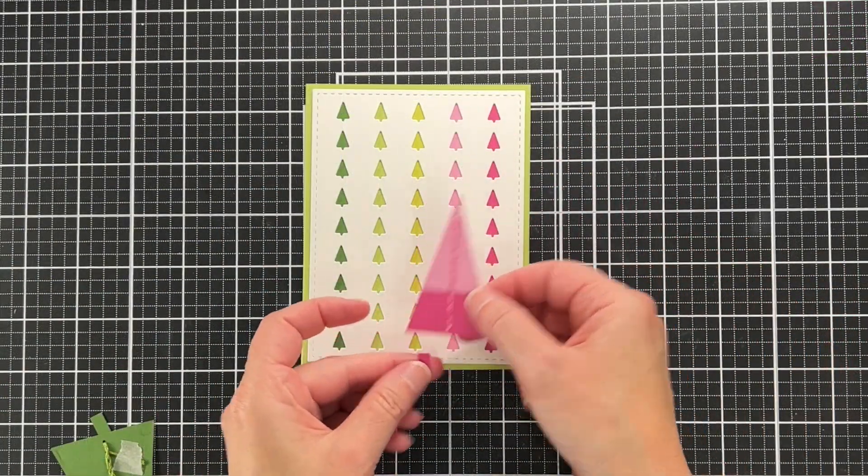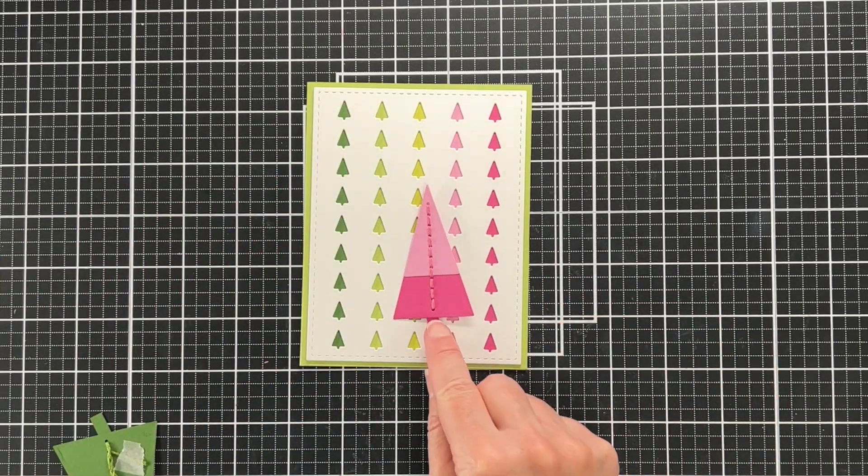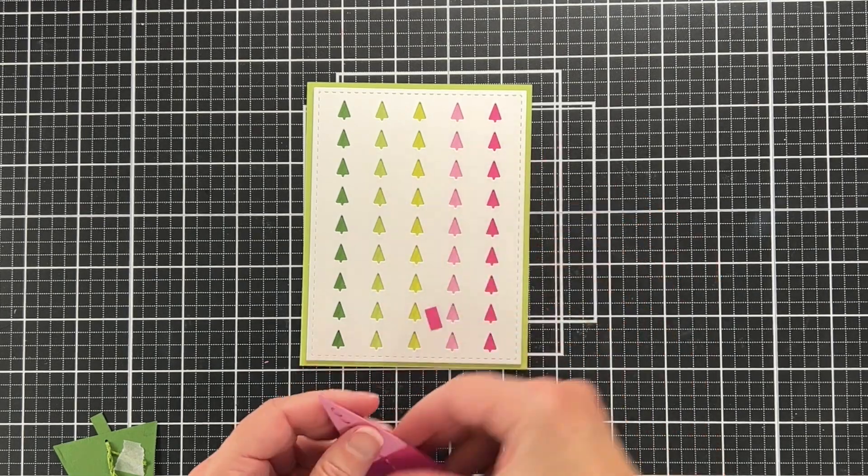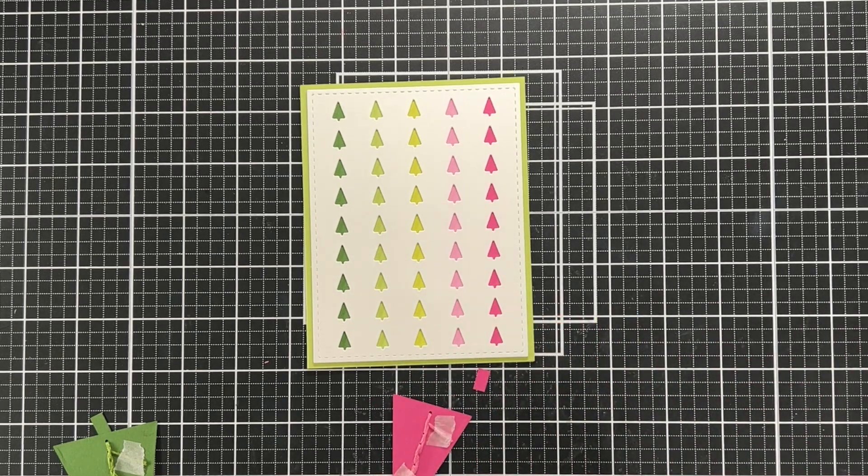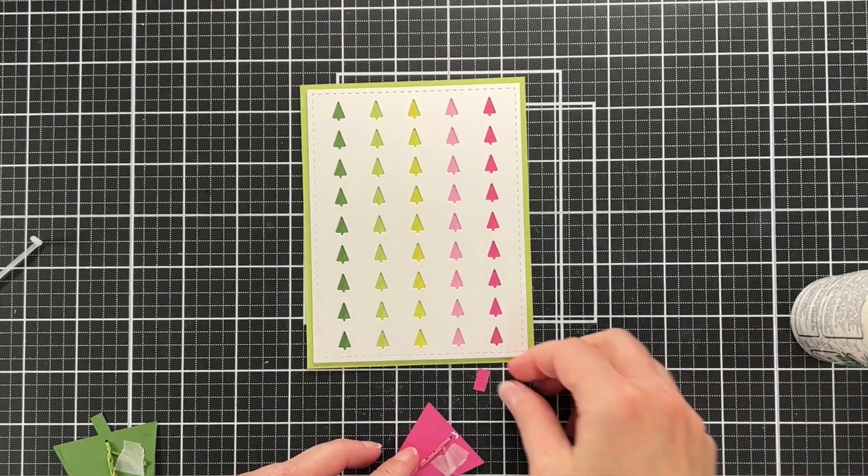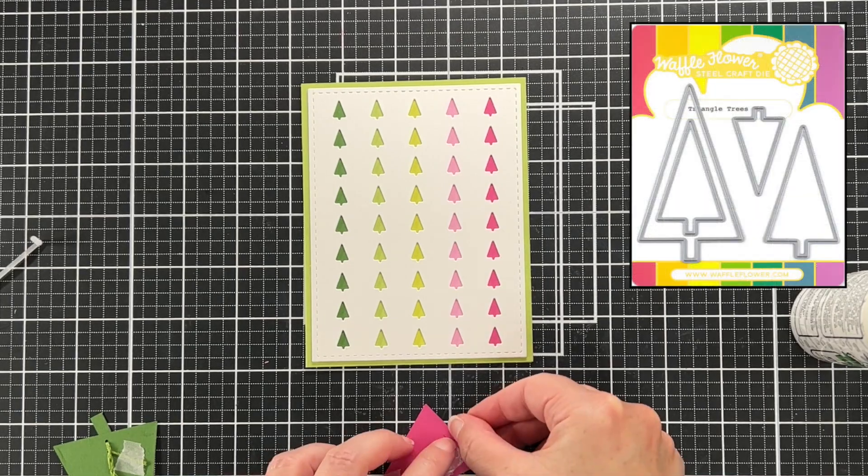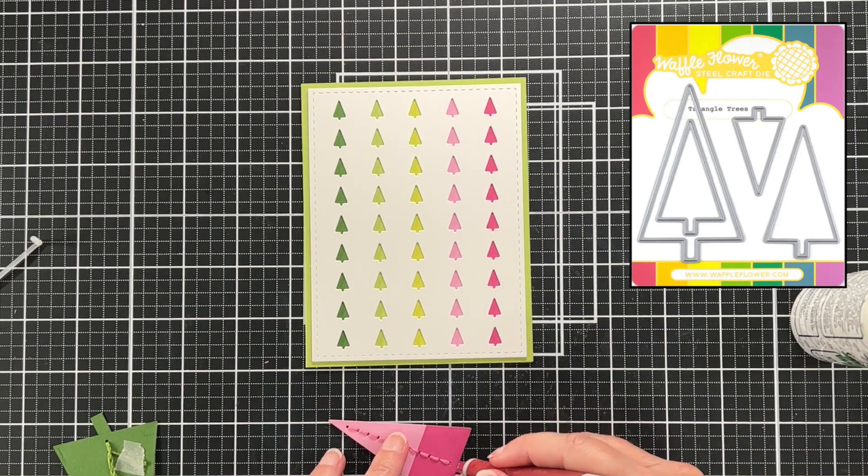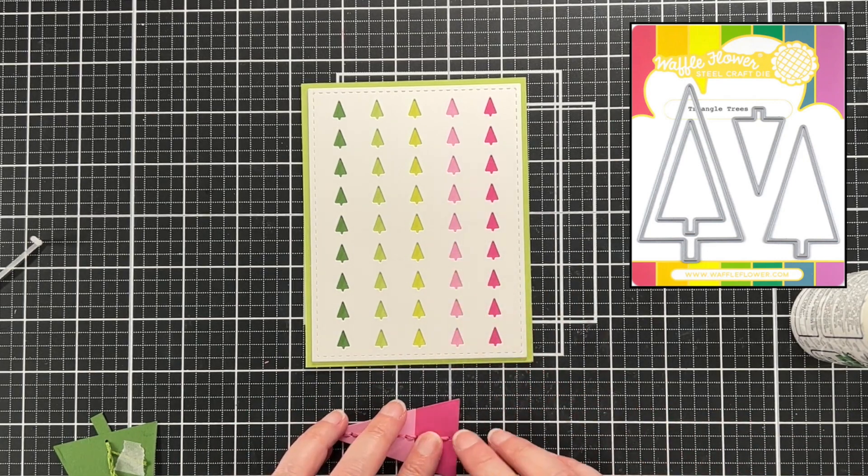All right, so now it's time to attach the trees. But I thought it would be cute to add a little trunk to the tree to kind of mimic the trees that are on the panel. So I just cut a little strip of paper and I'm attaching it to the bottom. By the way, there is a set of tree dies that have a trunk from Waffle Flower—you see them right here. This is just a snapshot from their website.